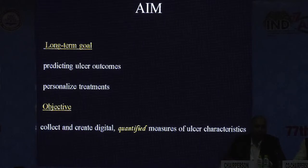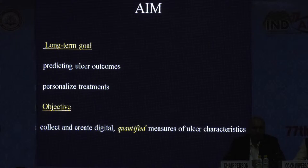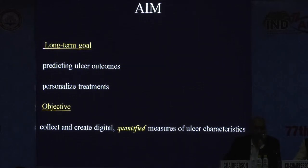Our project team consisted of corneal specialists from Aravind Eye Hospital, Kellogg Eye Center Michigan, and applied ophthalmic engineers from Duke University. In order to achieve the long-term goal of predicting ulcer outcomes and to personalize treatments, our current objective of this study was to collect and create digital, quantified measures of the ulcer characteristics.